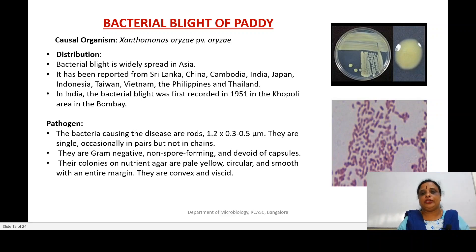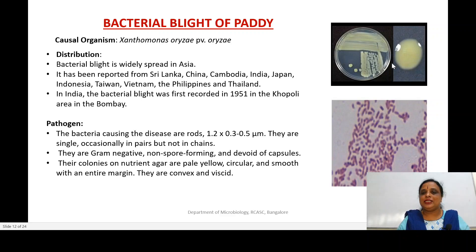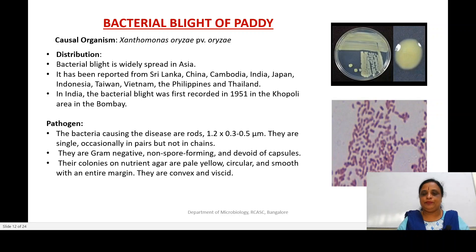Regarding colony characteristics, this organism can grow on nutrient agar. They form a pale yellow colony on the surface of the nutrient agar. The colony morphology is circular, smooth, with an entire margin, convex, and viscid. These are some of the characteristic features of Xanthomonas oryzae on nutrient agar.